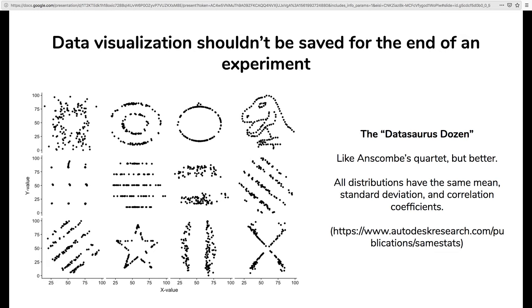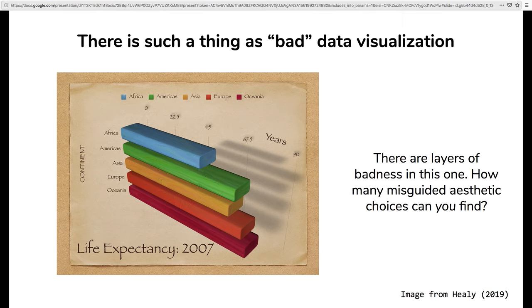The other point — a little bit subjective but also not — is that there is such a thing as bad data visualization. This is a purposefully bad example, also taken from the Healy textbook, showing life expectancy data for various continents around the world from 2007. This is really an onion of bad data visualization — layers to this one. We have a stacked bar plot that's 3D, with textures and shadows, rotated about 30 degrees so you can't even see where the bars line up with the axes, and it's in Papyrus font. The point here is not just that it's ugly — it's also communicating the data poorly. You can't even tell where those bars line up with the x-axis. Data visualization isn't just about making pretty plots; it's about communicating data clearly.